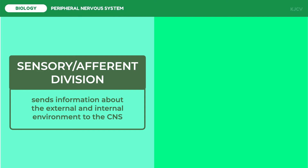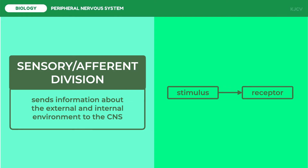Let us first focus our discussion on the sensory or afferent division. Information sent by this division to the CNS are called stimuli. A stimulus is a change detectable by the body. Stimuli exist in a variety of energy forms or modalities, such as heat, light, sound, pressure, and chemical changes. Afferent neurons have sensory receptors, or receptors for short, at their peripheral endings that respond to stimuli in both the external world and internal environment.